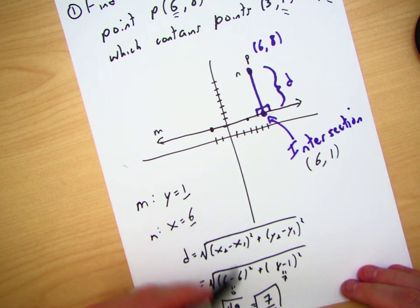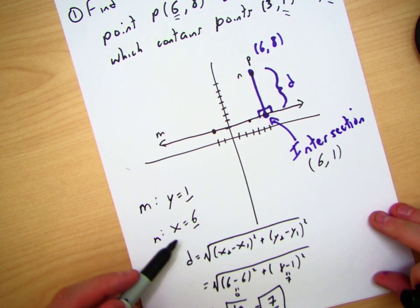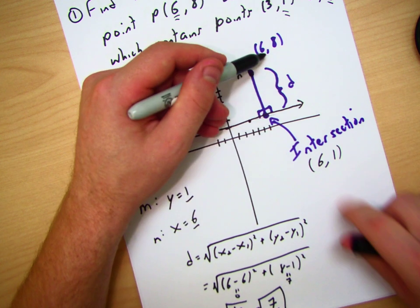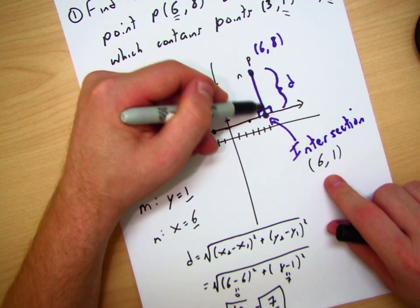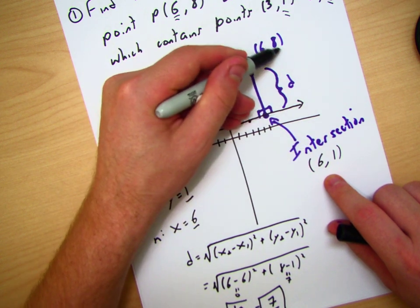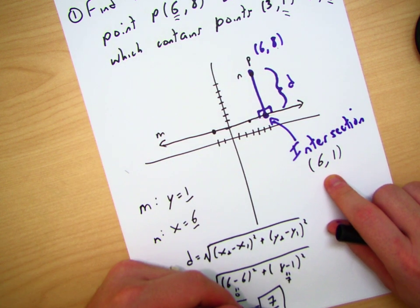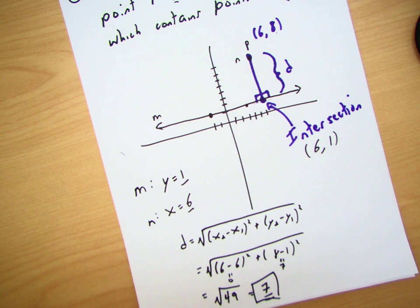By the way, I could have spotted this very quickly if I would have looked and said, well, wait a minute. From (6, 8) to (6, 1), again, this is just a vertical line. So the difference in this is going to be a difference of 8 - 1, which is 7. And I could have found it that way as well.